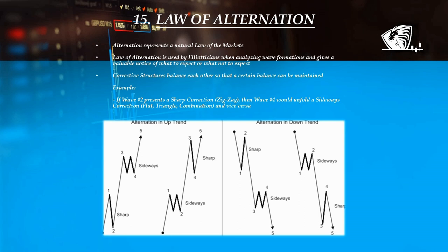For example, if wave 2 of an impulse presents a sharp correction such as a zigzag, then the analyst would expect wave 4 to present a sideways correction and vice versa. Most wave traders use alternation not as a prediction tool but mostly as an elimination tool.